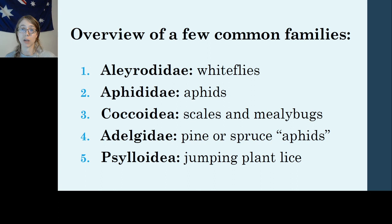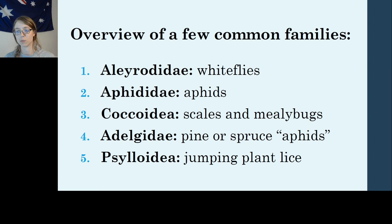Finally, a quick overview of the common families covered in the next two videos: Aleyrodidae (whiteflies), Aphididae (aphids), Coccoidea (the superfamily containing scales and mealybugs), Adelgidae (pine or spruce aphids — they're called aphids but aren't really), and finally Psylloidea, the jumping plant lice superfamily. For more information about life history and ecology of these families, take a look at the next two videos — hope to see you there!